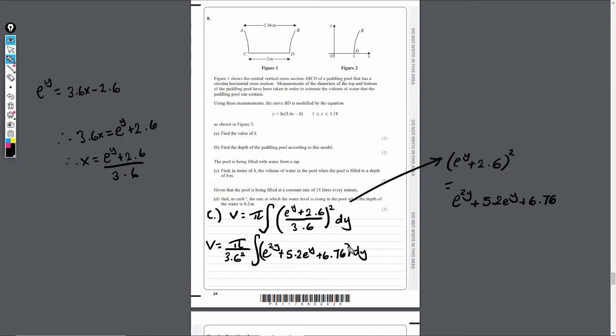So what we've got to do now is integrate this. Now let's think about limits. What it's saying is that this is in terms of h when it's filled to a depth of h meters. What we know is we're going to start with a depth of 0, nothing's in the pool, and it's going to go up to h. So my limits are just simply 0 to h. We're going to integrate this now between 0 to h.